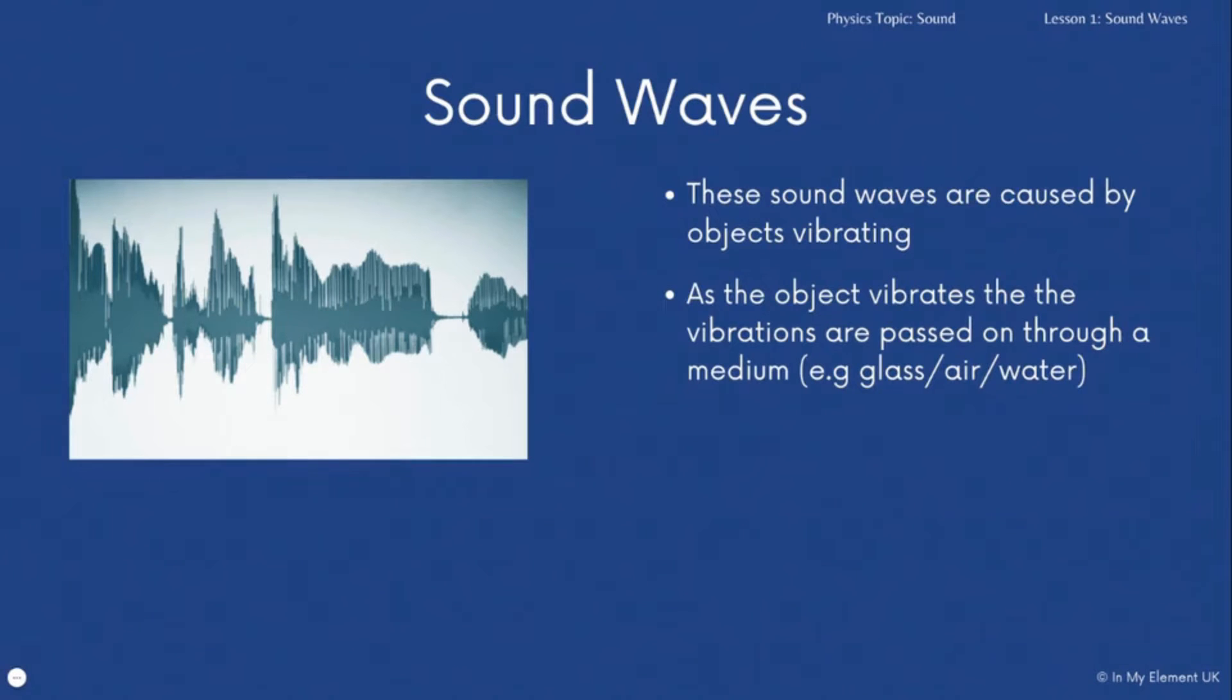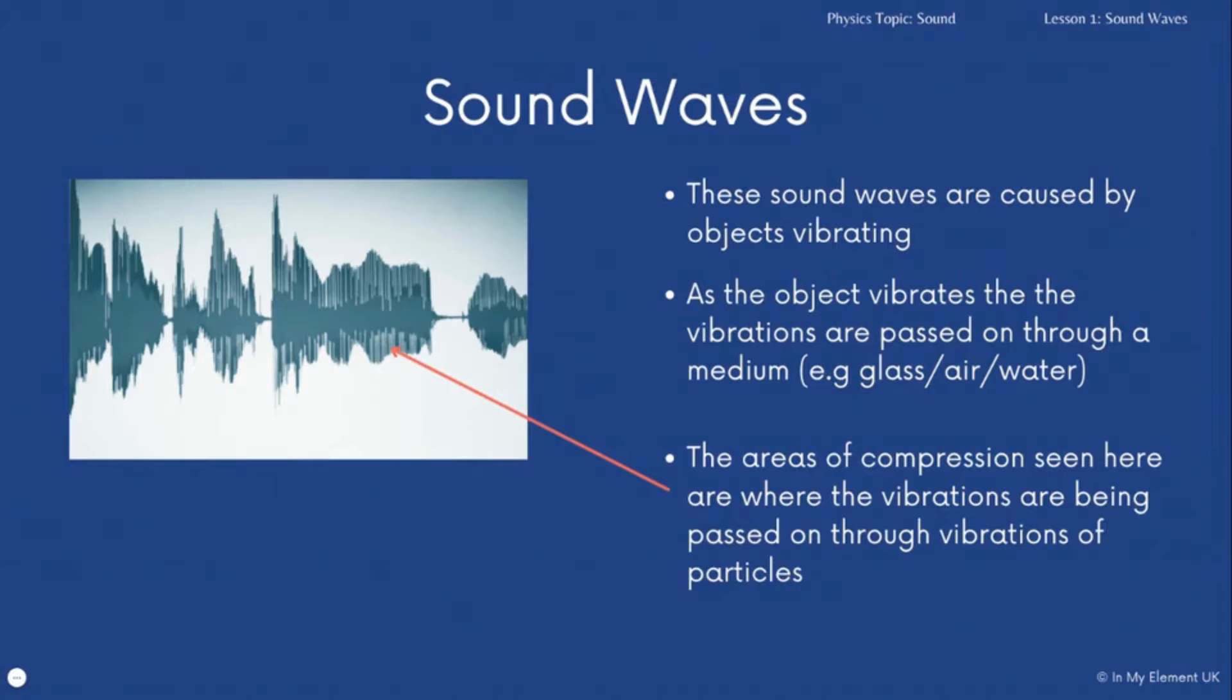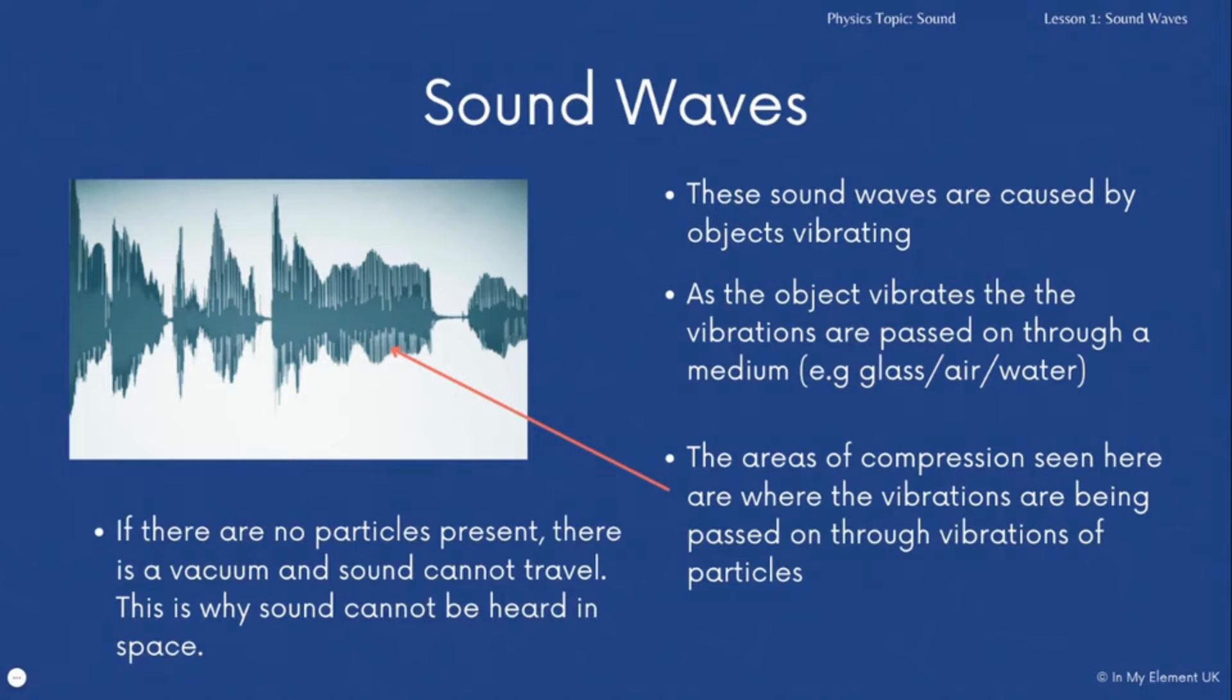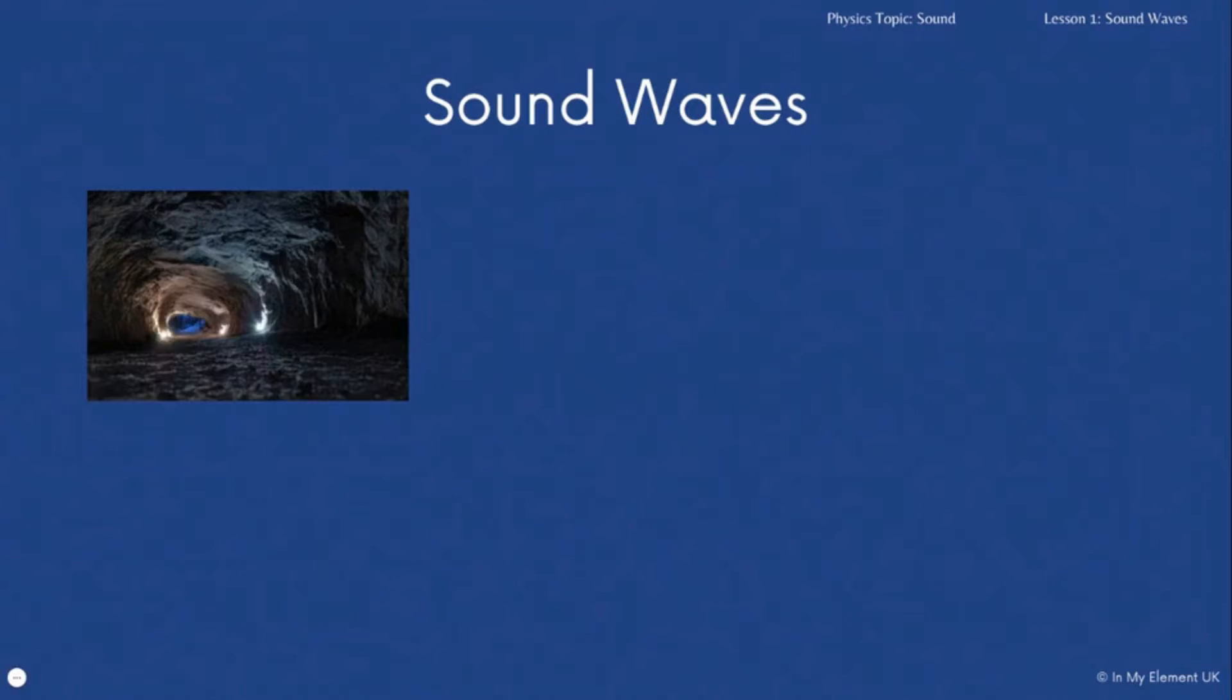As that object vibrates, those vibrations are passed on through a medium. Now that can be air, water, glass, but it does need a medium for those vibrations to be passed through. Then those areas of compression, where the vibrations are being passed on through the vibrations of particles. So if there are no particles present, the sound waves can't be passed on, and that occurs in a vacuum. If there is a vacuum where there are no particles present, then the sound can't travel through it, and that is why you can't hear sound in space.